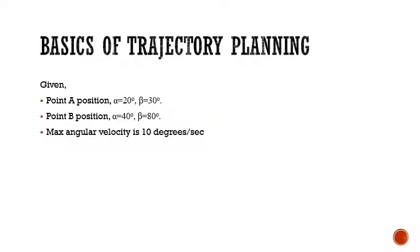A path can be achieved in different ways. Let's discuss a few methods. For example, for a particular robot position with a two-degree-of-freedom planar robot: point A is alpha = 20° and beta = 30°, and point B is alpha = 40° and beta = 80°. The maximum angular velocity for each motor is 10 degrees per second. One way of doing trajectory planning is to give maximum velocity to both joints.